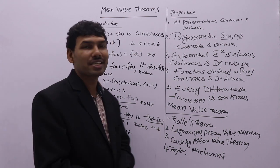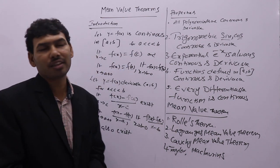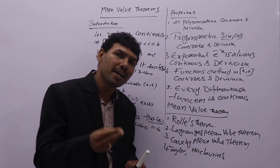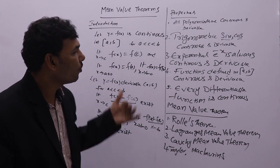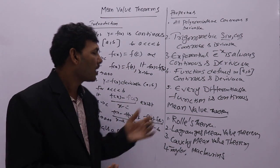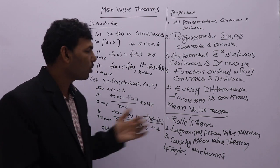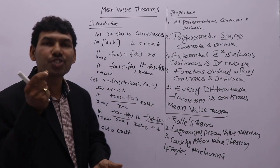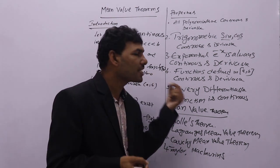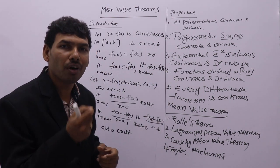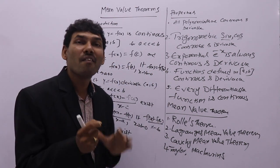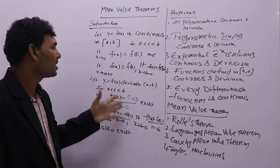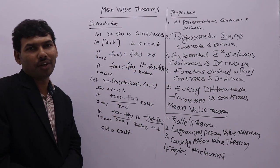These four topics describe functions which are continuous and derivable. Next we will discuss Rolle's theorem, where I will explain again — very easily, without applying these formulas — how to check whether a function is continuous or not, and derivable or not.